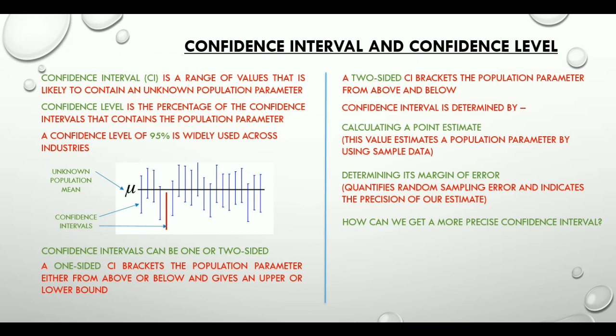First, increase the sample size. More data decreases the margin of error and the interval around the sample statistic becomes narrower, thus giving a more precise estimate of a population parameter.